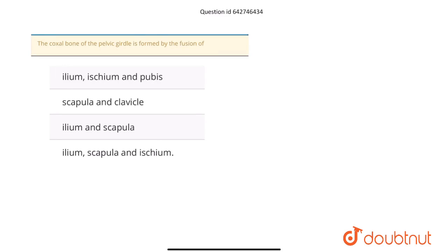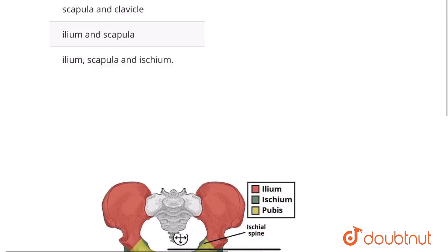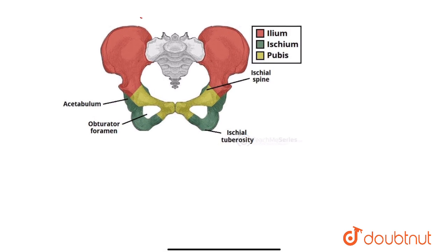See, this is our pelvic girdle. These two are the separate coxal bones - this is one coxal bone and this one is another coxal bone.